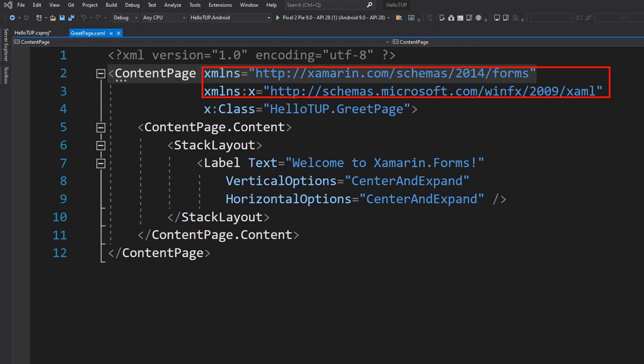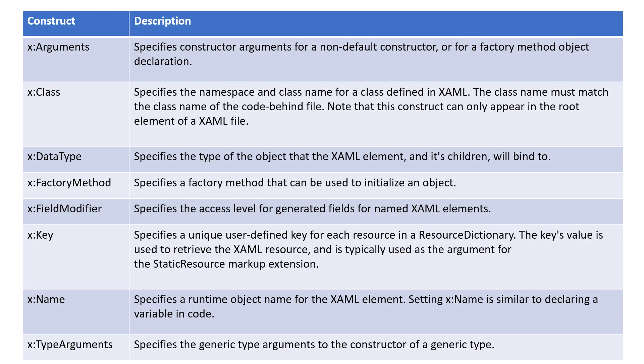The second namespace declaration uses the X prefix. XAML uses prefixes to declare non-default namespaces, with the prefix being used when referencing types within the namespace. The X namespace declaration specifies that elements defined within the XAML with a prefix of X are used for elements and attributes intrinsic to XAML — specifically the 2009 XAML specification. X:Class specifies the namespace and class name for a class defined in XAML, and the class name must match the class name of the code behind file. This construct can only appear in the root element of a XAML file.